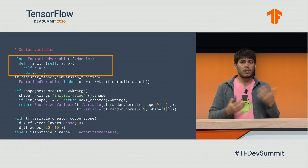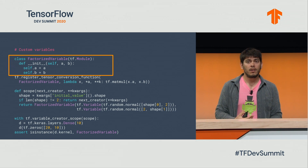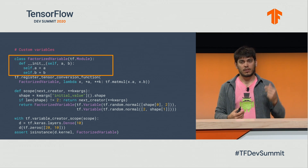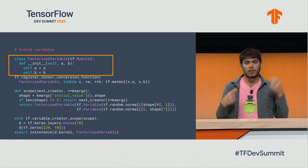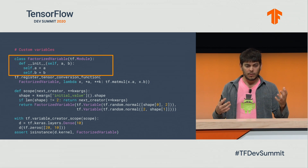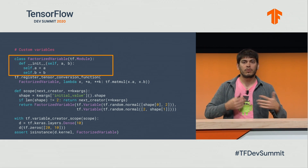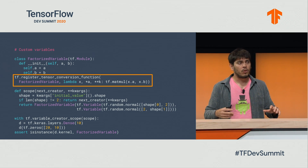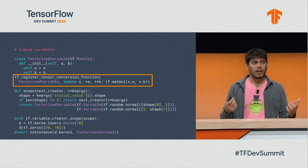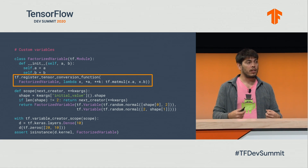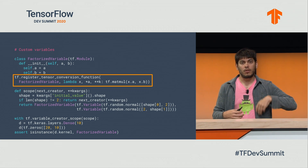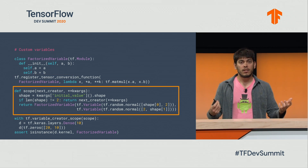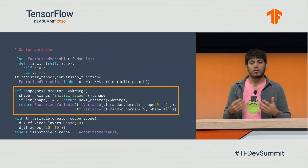If I wanted to do this re-parameterization of the Keras layers, it's actually pretty simple. First, I define what type I want to use to store those things. Here I'm using a factorized variable type, which is a tf.Module. tf.Module is a very convenient type: you can have variables as members, and we can track them automatically. Once I've defined this type — it's really just a left half and a right half — I can tell TensorFlow how to use objects of this type as part of TensorFlow computations, doing a matrix multiplication of the left and right components. And this is all I need to make my own little variable creator scope.